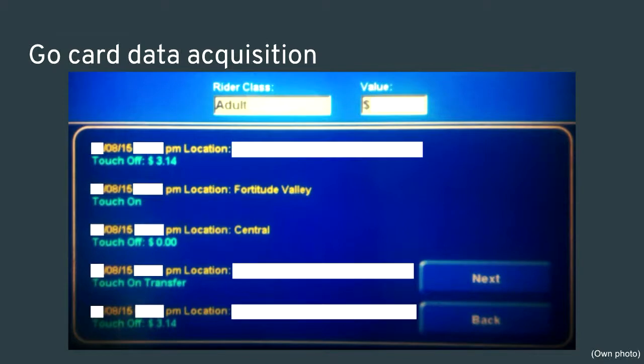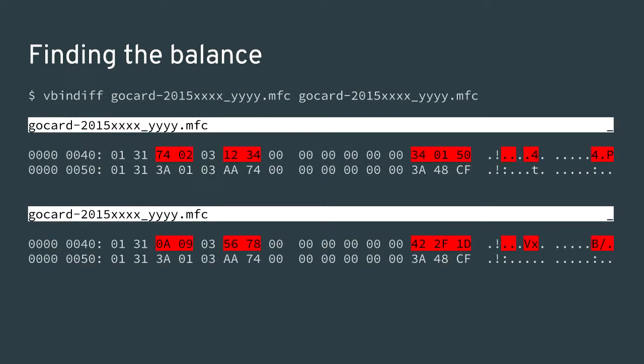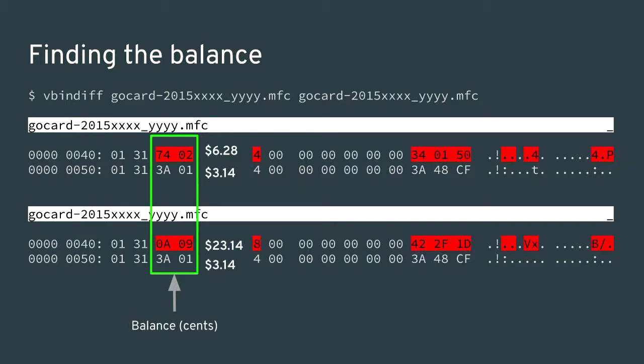At this point I had access to the raw data on the card. I then went and did some trips and logged every step of the way, keeping a travel log and frequently visiting value-add machines to check what data was there when I tapped. To find the card balance field, I made a backup of the card, recorded the current balance of $3.14, added $20 using a value-add machine, made another backup, and then used a tool called vbindiff, which shows diffs of binary files, highlighting all the changes.